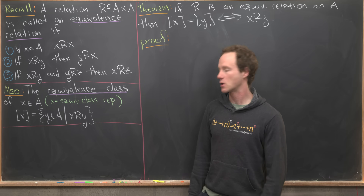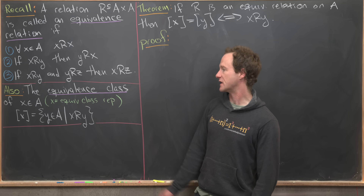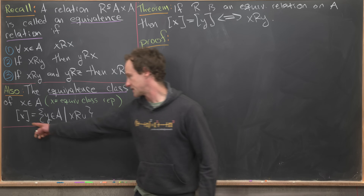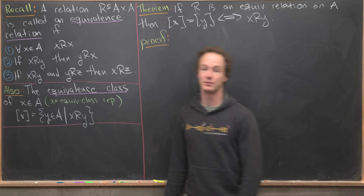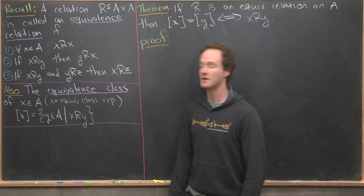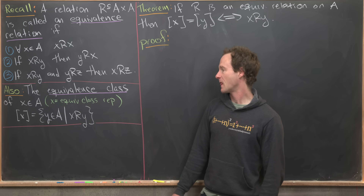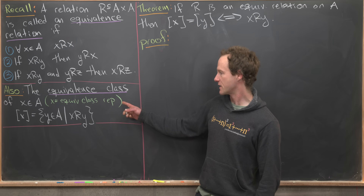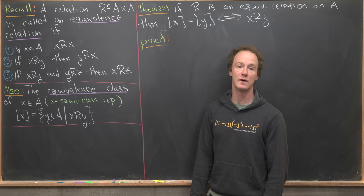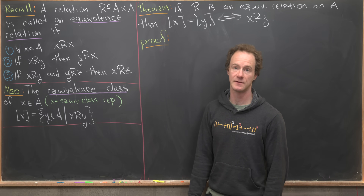Next, I want to recall what an equivalence class is. The equivalence class of an element X in A, generally denoted by bracket X, is the set of all Y in A that are related to X. This X is sometimes called an equivalence class representative, so that's important to take note of.